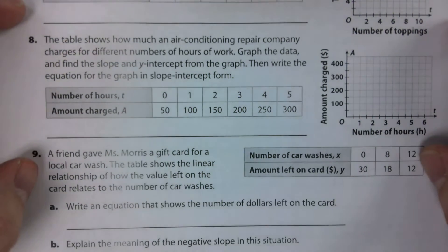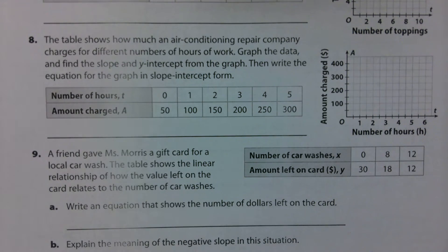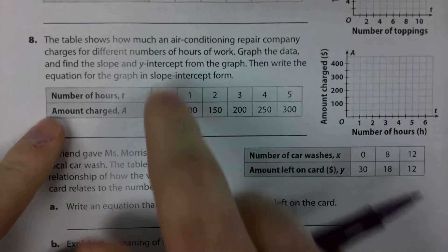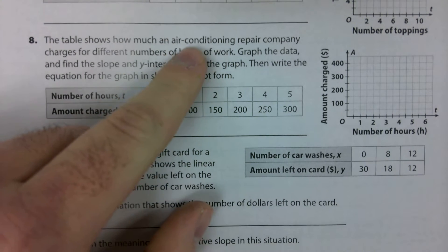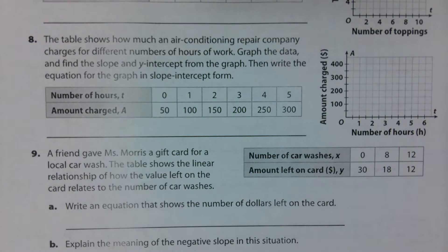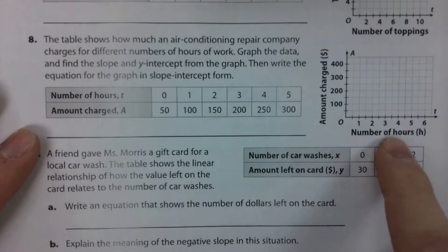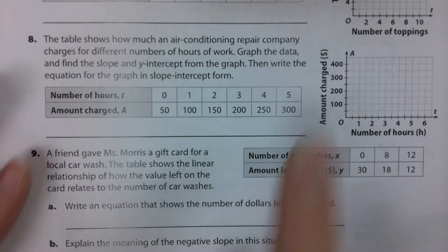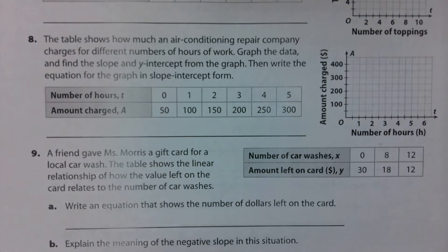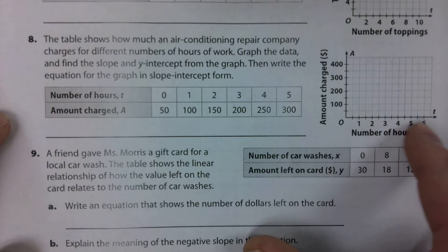Starting with number eight, we've got a table here that's comparing the number of hours and the amount charged for an air conditioning repair company. So this table shows us how much the repair company charges for a different number of hours of work. We're comparing hours and money.